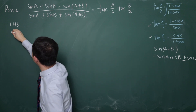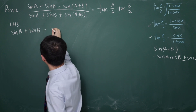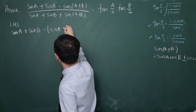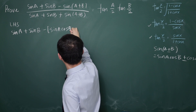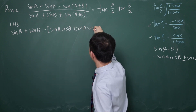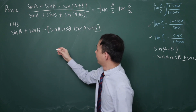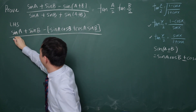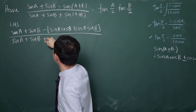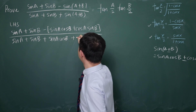So this is what happens: I write sin A plus sin B minus, and then sin(A+B) expands to sin A cos B plus cos A sin B. Applying this in both numerator and denominator, the next thing I ask myself is what I can do to further simplify the expression now that sin(A+B) has been expanded.